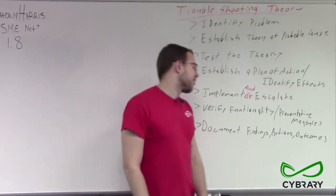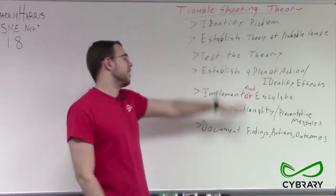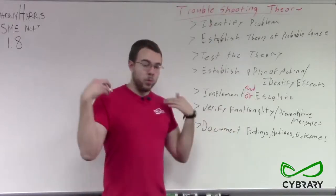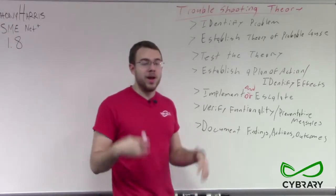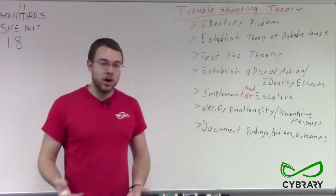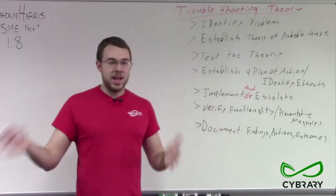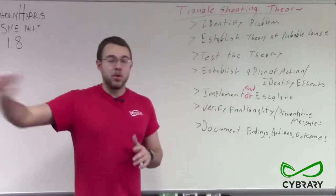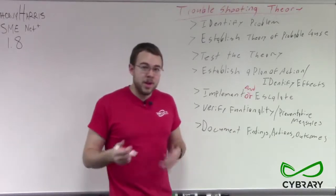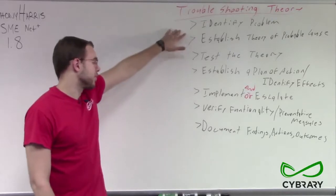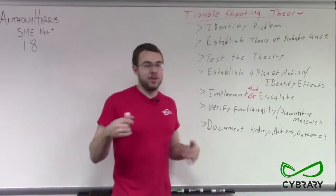Now we document our findings, actions and outcomes. We want to document everything from step A to Z. We want to start from what we noticed when this issue was occurring, what we did to troubleshoot and narrow down where this issue was, what we tested, what worked, what didn't work, and then how we fixed the problem and the outcomes. That way if this problem were to happen again, maybe even a year or multiple years down the road with someone completely different, they could use our documentation to solve the same issue. So that's our troubleshooting theory from identifying our problem to documenting. Now let's take a closer look at our individual steps in our troubleshooting.